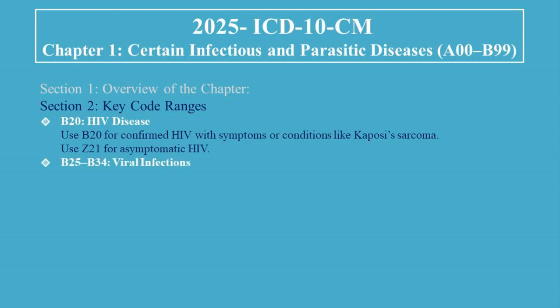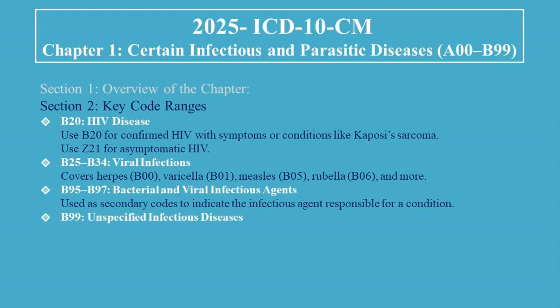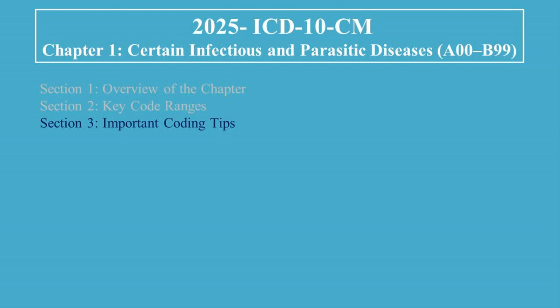B25 to B34 covers Viral Infections, including herpes (B00), Varicella (B01), Measles (B05), Rubella (B06), and more. B95 to B97 covers Bacterial and Viral Infectious Agents, used as secondary codes to indicate the infectious agent responsible for a condition. B99 is used for Unspecified Infectious Diseases, only when no further detail is available.